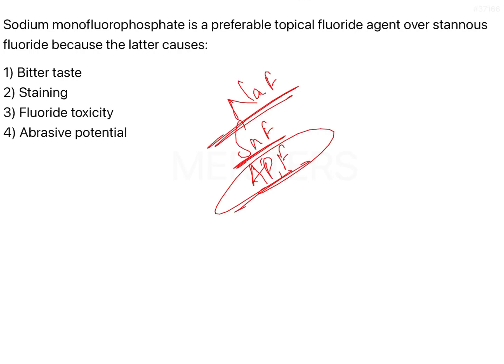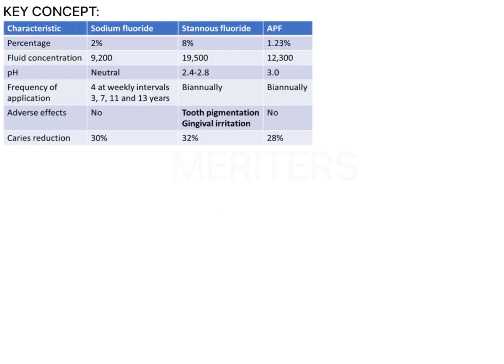One important thing to remember — this is from Sobin Peter. There is one entire table given in that textbook which has to be learned by heart because a lot of questions are asked on fluoride day in and day out. Now if you look at that table, the caries reduction is actually highest for stannous fluoride as compared to sodium fluoride and APF.